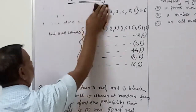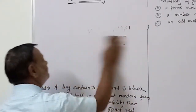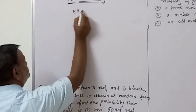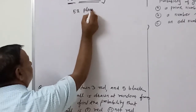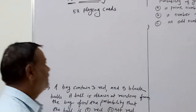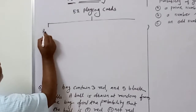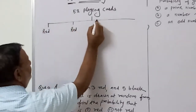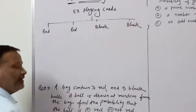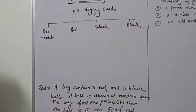Now, a pack of 52 playing cards. There are four types of playing cards: number one - red, number two - red, number three - black, and number four - also black. The first red type is heart.